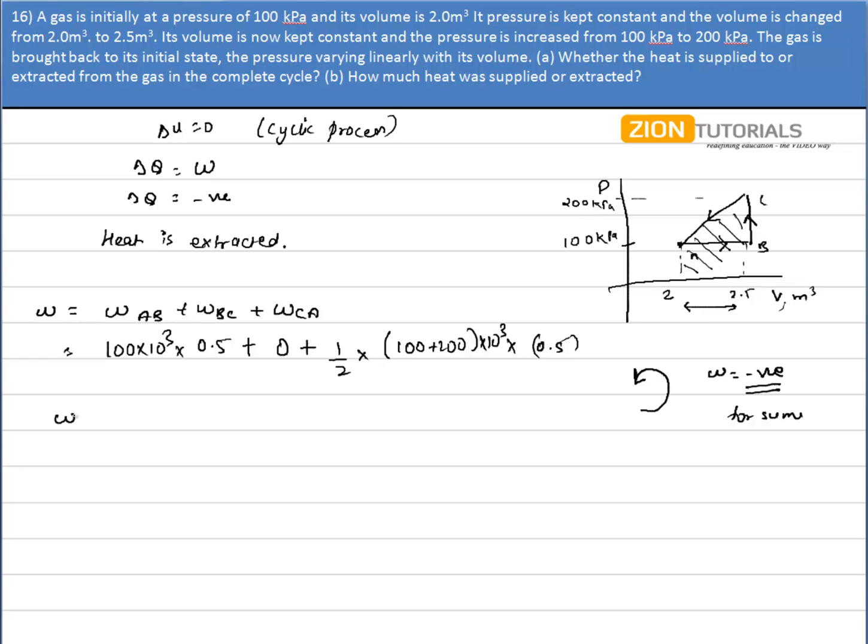On solving this I get the value of work done as 25,000 joules. And that is negative because the negative sign shows that work is done on the system. So delta Q is equal to work done, that comes out to minus 25,000 joules. That is my answer.